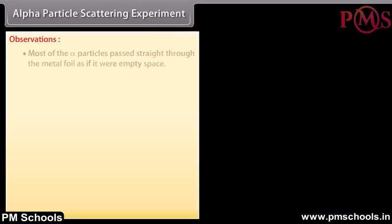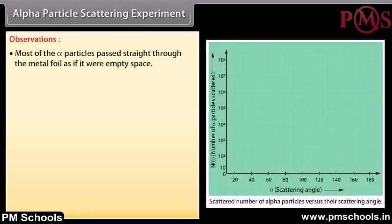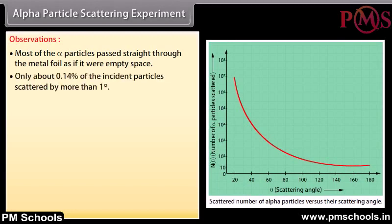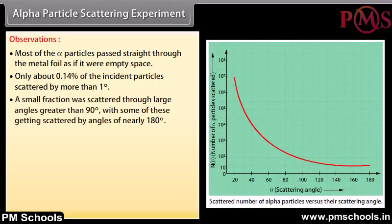Observations. Most of the alpha particles passed straight through the metal foil as if it were empty space. Only about 0.14% of the incident particles were scattered by more than 1 degree. Small fractions were scattered through large angles greater than 90 degrees, with some getting scattered by angles of nearly 180 degrees.